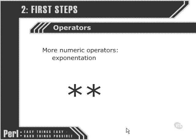We also have some extra numeric operators that we don't have, or at least don't notate in quite the same way, in standard maths. Exponentiation — raising a number to a power — is represented by two asterisks. We also have modulus.